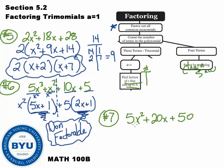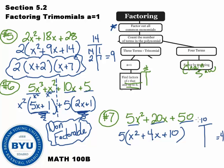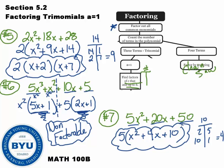Question number 7: first step, factor out the common stuff. Looks like there is a 5 in both terms, so I take out the 5, leaving x squared plus 4x plus 10. This is 3 terms, so I find the factors of 10 that add to 4. Factors of 10: 2 and 5 add to 7 — no; 10 and 1 add to 11 — no. This cannot factor further. Some people want to say it's non-factorable, but it did factor in the first step. So our final answer is 5 times x squared plus 4x plus 10; we leave that parenthesis there.